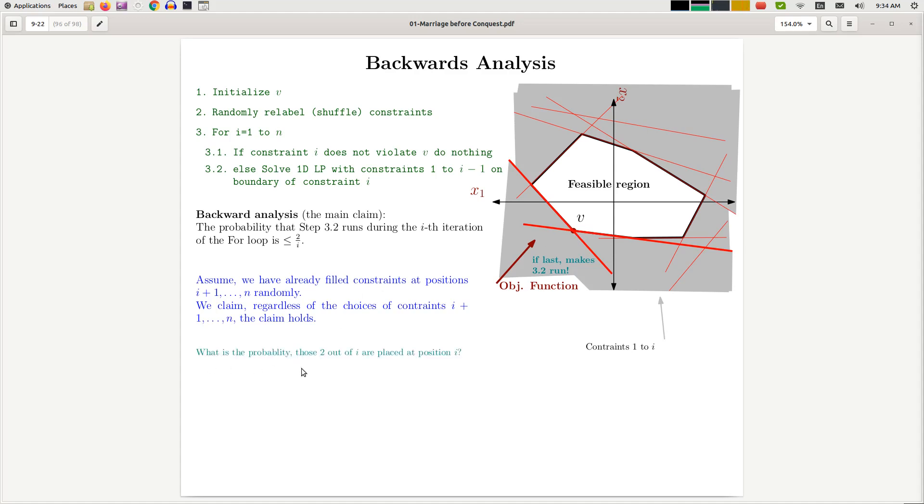So what is the probability that we pick two out of i-th constraint at position number i? Well, that is obviously 2/i. So the probability that either of the two problematic constraints we select as constraint number i is at most 2/i. So therefore, this probability is at most 2/i. And therefore, that probability is at most 2/i. So therefore, we have proven the main backwards analysis, the claim of the backward analysis, and then we're done with analysis.